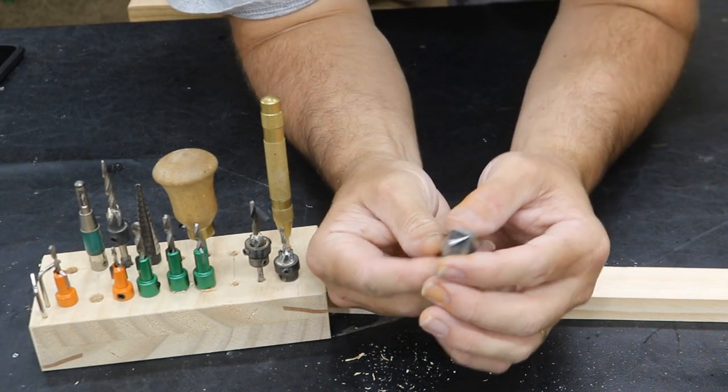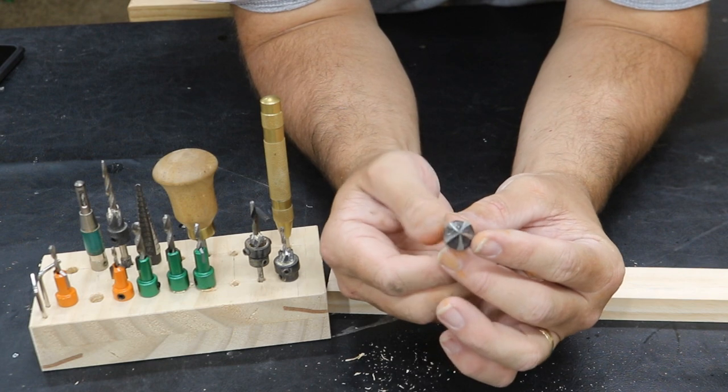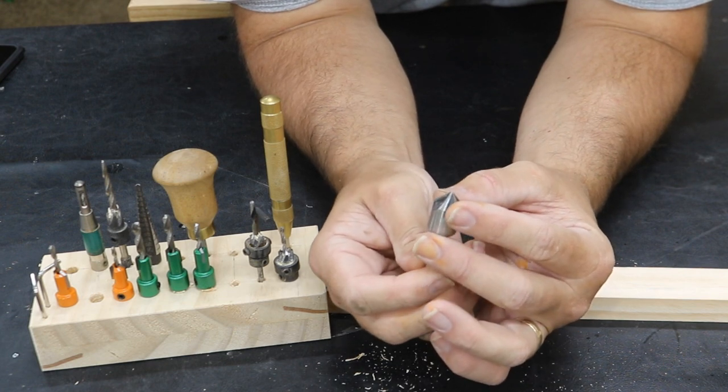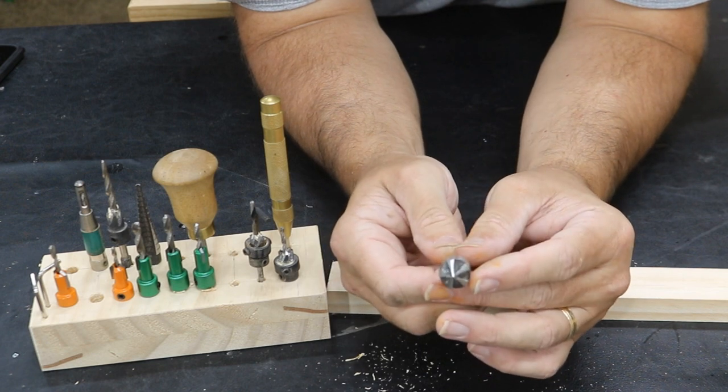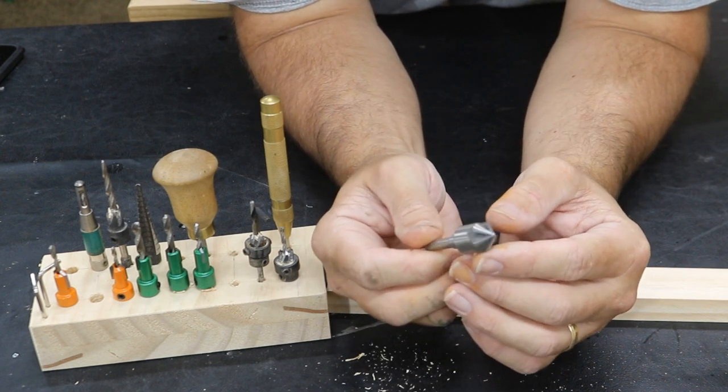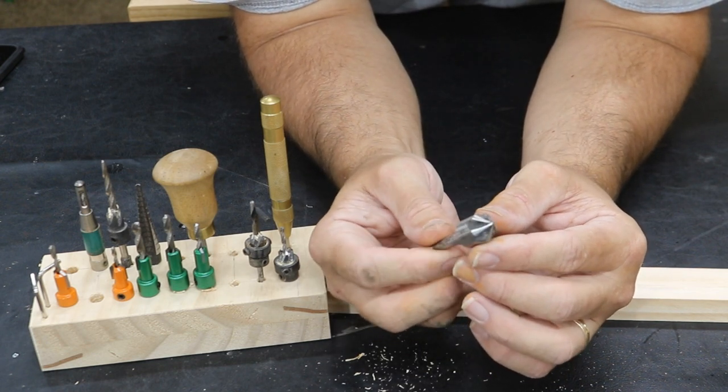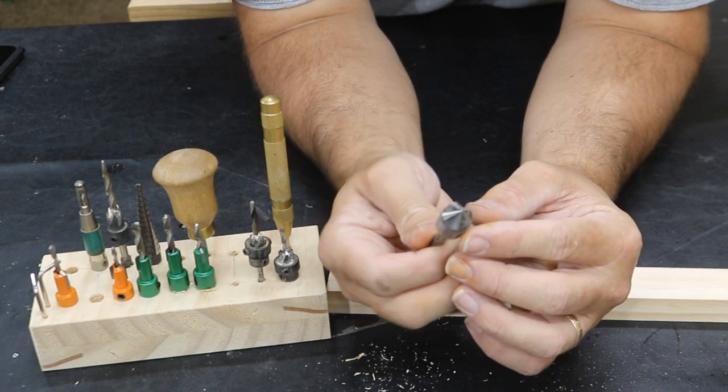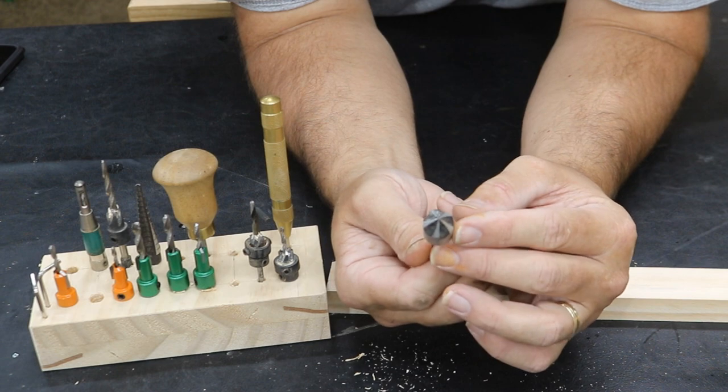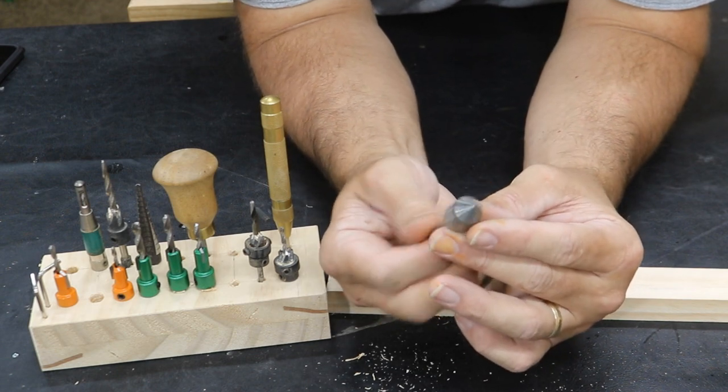Now this one here, it is a countersink bit. It works okay. I think it has, let's see, five flutes to it. But really it works better for steel, not so much wood. The wood, it just kind of chatters out. It does actually countersink, but it's really more for steel.